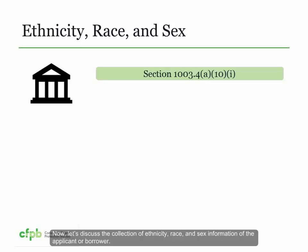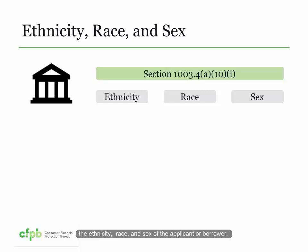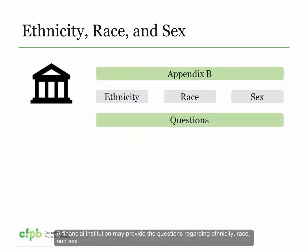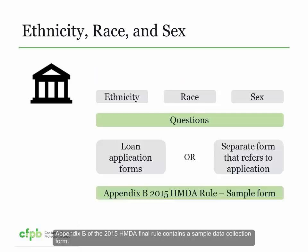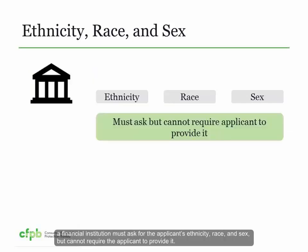Now let's discuss the collection of ethnicity, race, and sex information of the applicant or borrower. Section 1003.4 requires that financial institutions report the ethnicity, race, and sex of the applicant or borrower, and whether the information was collected based on visual observation or surname. A financial institution may provide the questions on its loan application form or on a separate form. Whether the application is taken in person, by mail, by telephone, or on the internet, a financial institution must ask for the applicant's ethnicity, race, and sex, but cannot require the applicant to provide it.